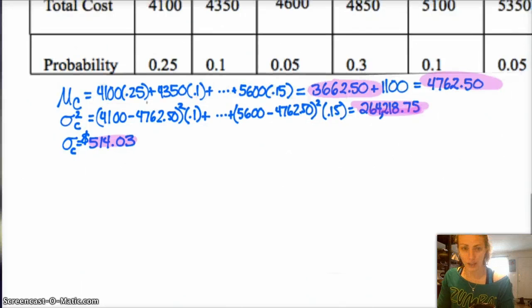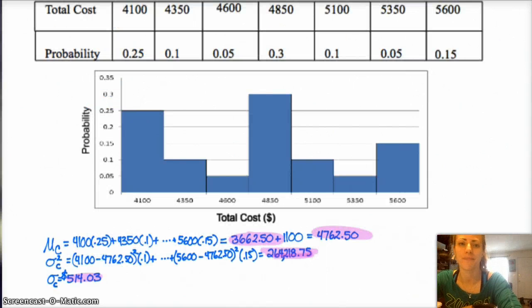And then, if you make your probability distribution, your histogram, it should look exactly the same. Except, your values on the x-axis will all be shifted to the right $1,100. Because every value, you add $1,100 to. And then, you have your probability distribution. Okay.